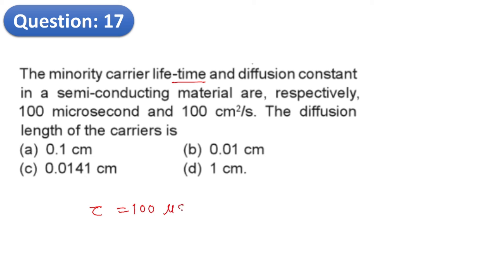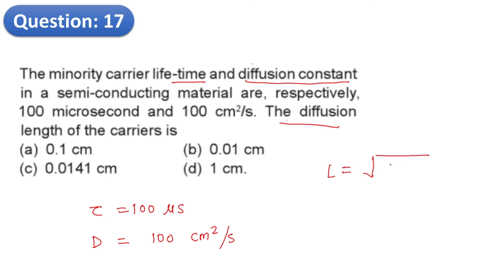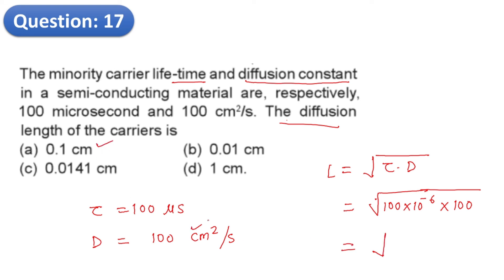Question 17: The minority carrier lifetime tau is 100 microseconds and diffusion constant D is 100 cm²/s. The diffusion length L equals the square root of (tau times D). With tau equal to 10⁻⁶ s and D equal to 100 cm²/s: L equals square root of (10⁻⁶ times 10²) = square root of 10⁻⁴ = 10⁻² cm, which equals 10⁻¹ mm. The correct answer is A.